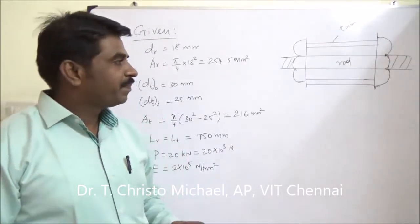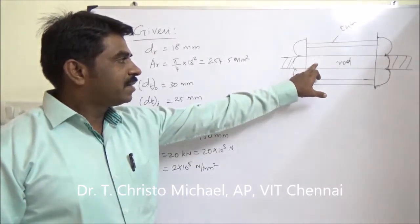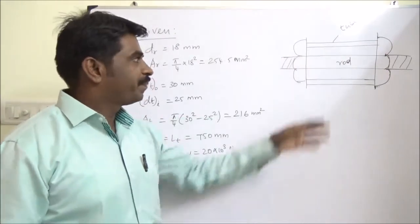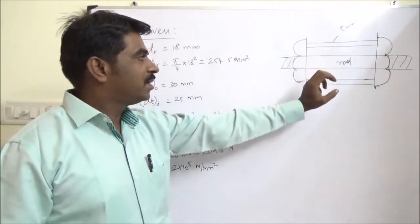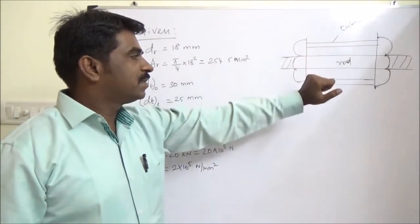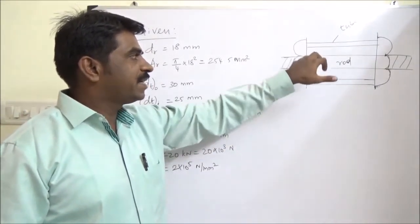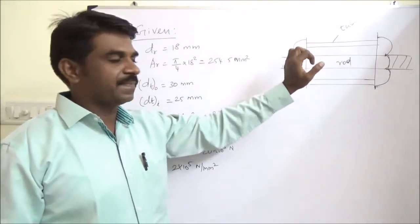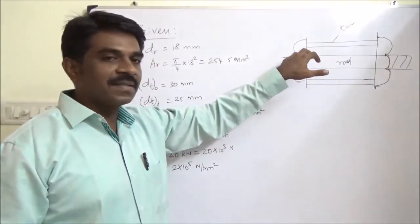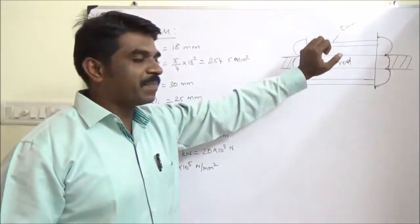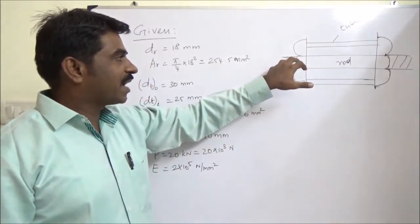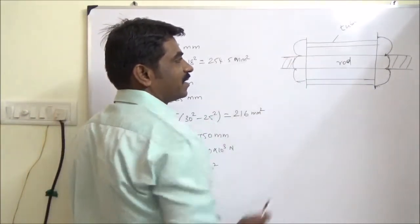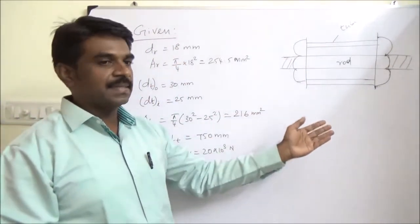Let us solve this problem. The rod here is threaded so it behaves as the bolt and it is surrounded by a tube. The nut tightens the tube, so the rod because of the tightening of the nut will experience a tensile stress. Here it is compressive. So the force acting on the rod is tensile and the force here on the tube is compressive.